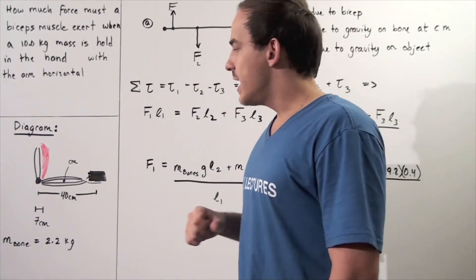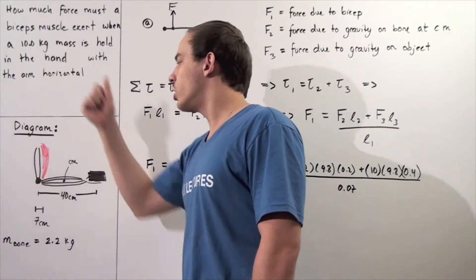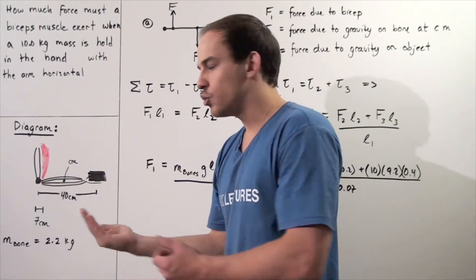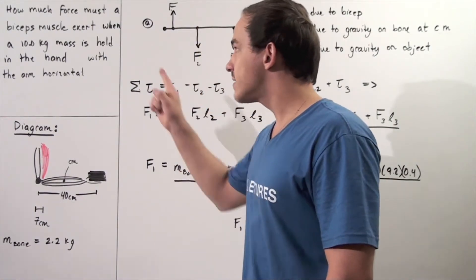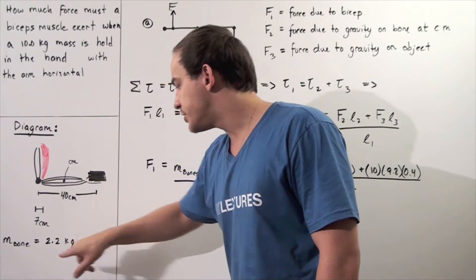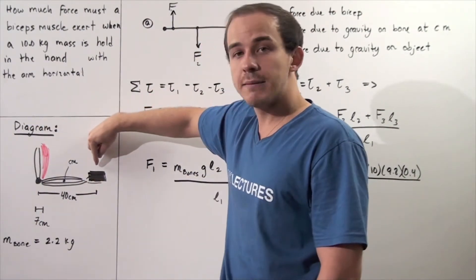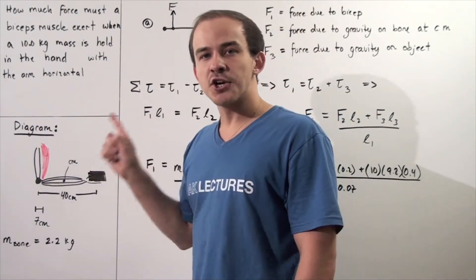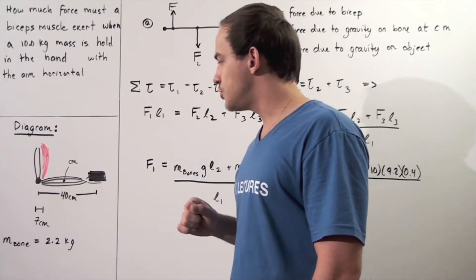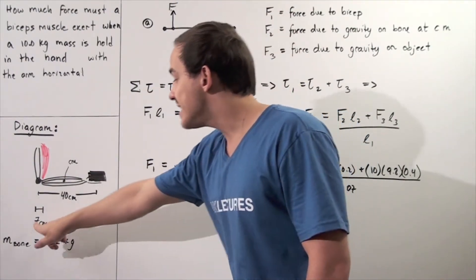Looking at our diagram, we have the arm with the bicep muscle attached to the bone, and these two objects point along the y-axis. This bone is held along the x-axis, parallel to it. The mass of the object is 10 kilograms, and the mass of the entire bone section is 2.2 kilograms. The total length from the joint to where the object is located is 40 centimeters. The center of mass of the bone section is at the middle, 20 centimeters from the axis of rotation. The distance from the axis of rotation to where the bicep muscle acts is 7 centimeters.